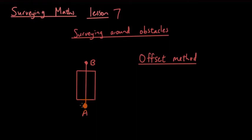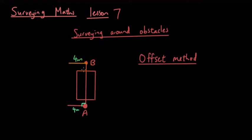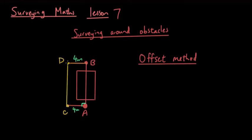At point A I draw an offset to the survey line — it's a right angle at this intersection. Now, however long this offset is, for example if this offset is 4 meters, then I'm going to draw an equal offset at point B that is also 4 meters — exactly the same length. At the end of the two offsets, let's call them point C and point D. I can now draw a line from point C to point D.